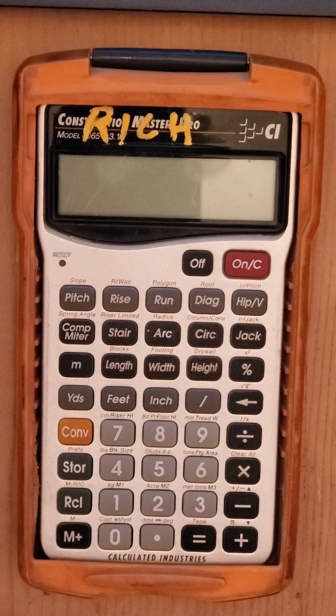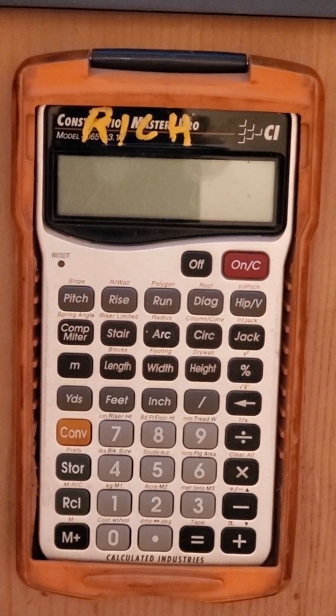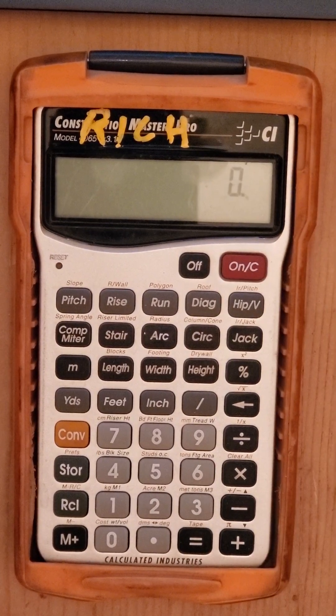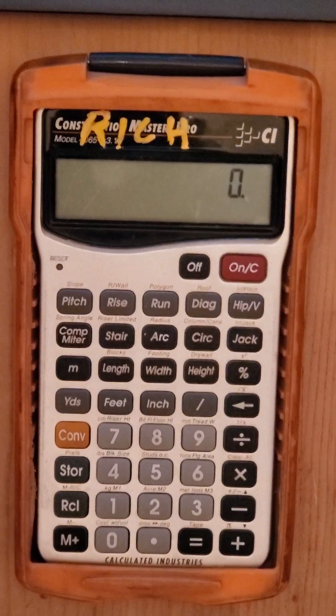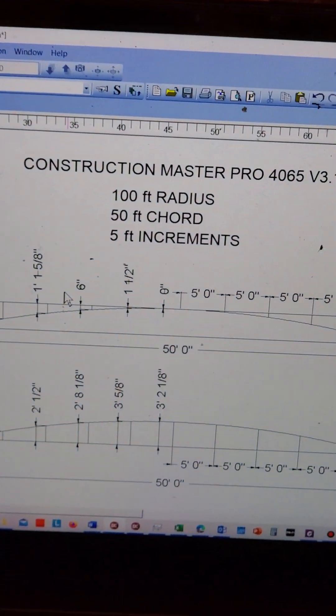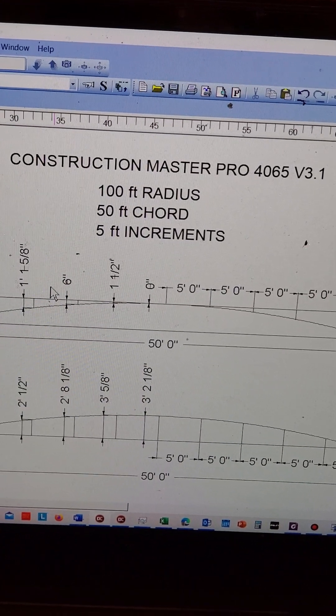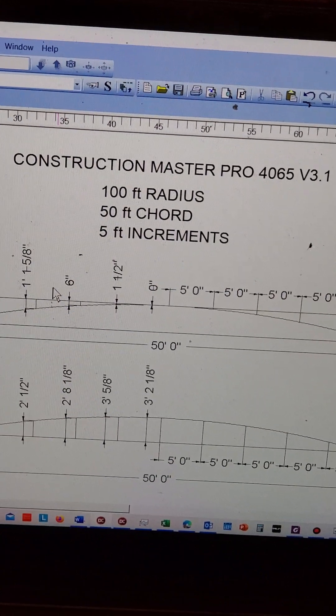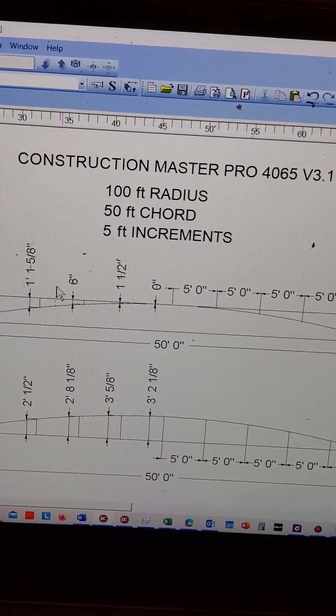Alright, here's a video on how to lay out a large radius with the Construction Master Pro. The parameters are usually set for you. So right there I've got Construction Master Pro, version 4065, version 3.1. The parameters are 100 foot radius, 50 foot chord, and we're going to do it in 5 foot increments.